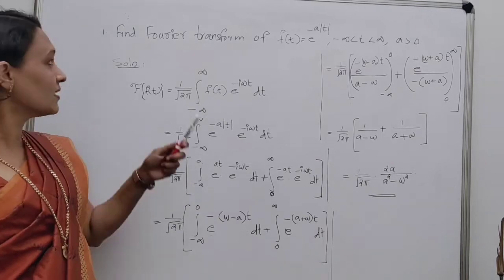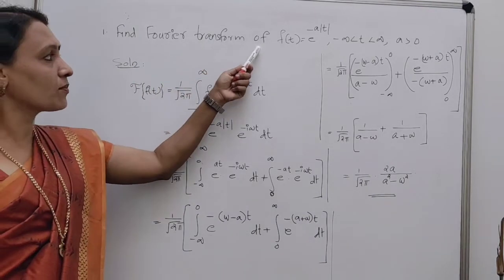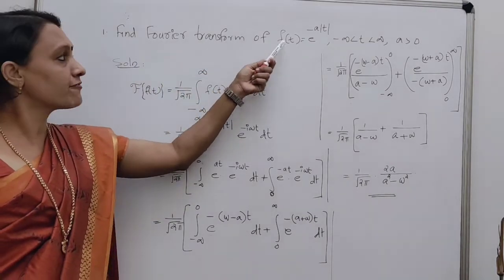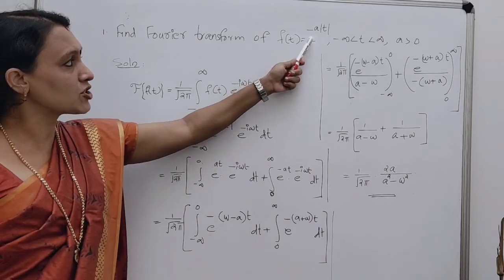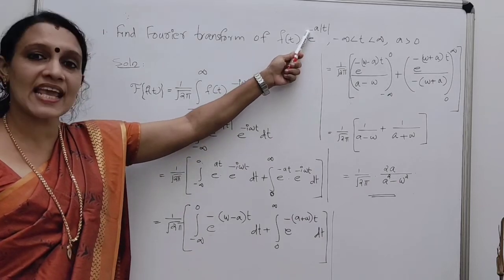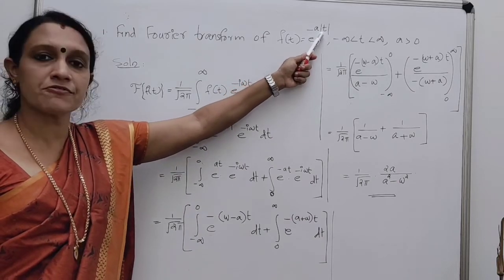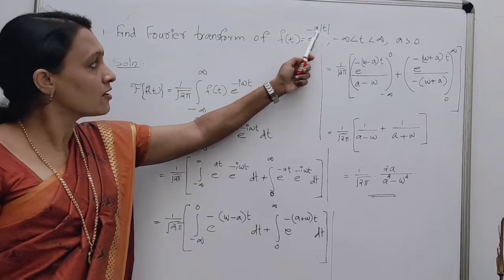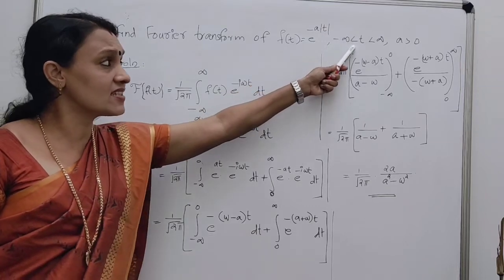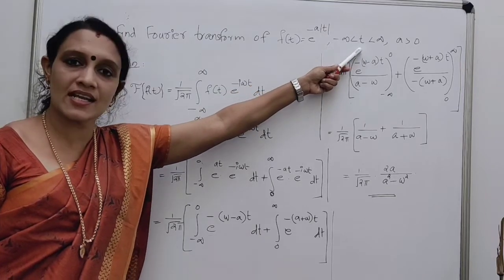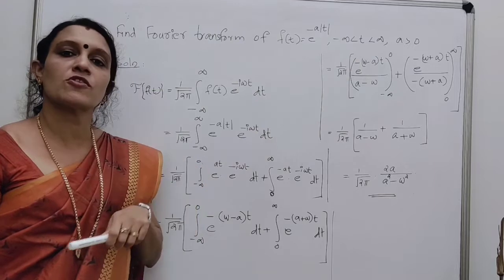Look at the first question. Find the Fourier transform of f(t) = e^(-a|t|) for minus infinity less than t less than infinity, where a is positive.